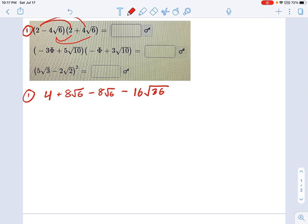So 8 radical 6 minus 8 radical 6, those cancel each other out. What we have is 4 minus 16 times root 36. Root 36 is just 6. So this is 4 minus 96, and that equals negative 92.